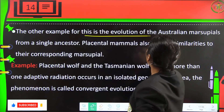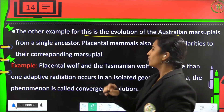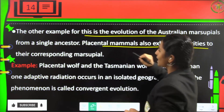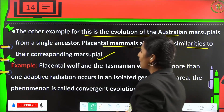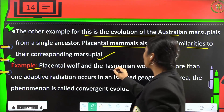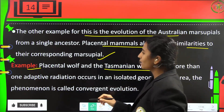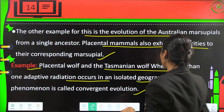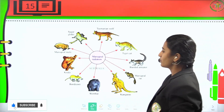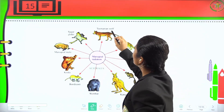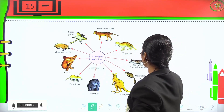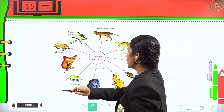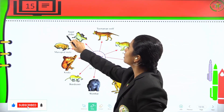Another example of adaptive radiation is the Australian marsupials from a single ancestor. Placental mammals also exhibit similarities with their corresponding marsupials — for example, placental wolf and the Tasmanian wolf. When more than one adaptive radiation occurs in an isolated geographical area, this phenomenon is called convergent evolution. Examples of marsupial radiation include the Tasmanian wolf, tiger cat, banded anteater, marsupial rat, kangaroo, wombat, bandicoot, koala, marsupial mole, and sugar glider.